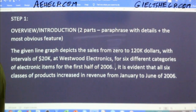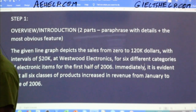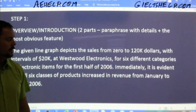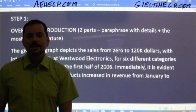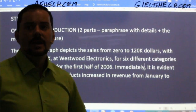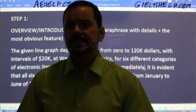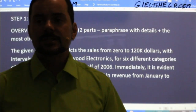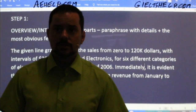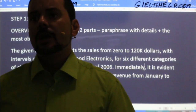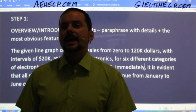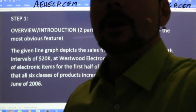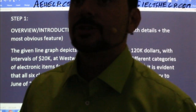So my full overview reads: 'The given line graph depicts the sales from zero to $120,000 with intervals of $20,000 at Westwood Electronics for six different categories of electronic items for the first half of 2006. At first glance, it is evident that all six classes of products increased in revenue from January to June of 2006.' I notice 'first half' and 'at first glance' are close together, so I'll replace 'at first glance' with 'immediately' to reduce redundancy.